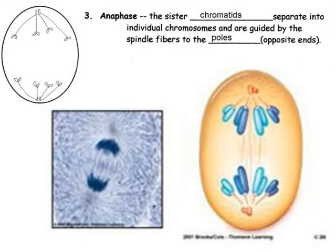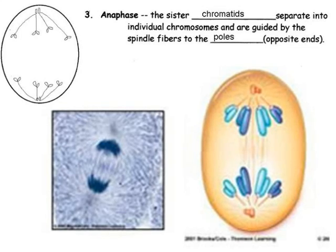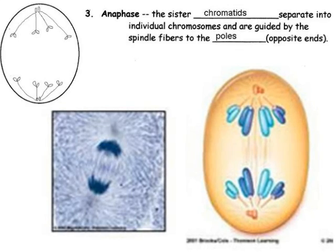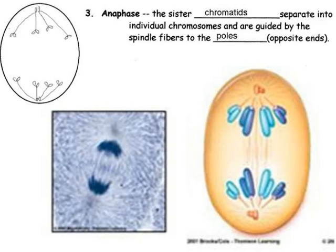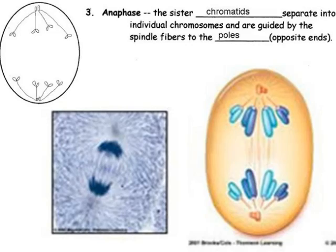During anaphase, the sister chromatids separate into individual chromosomes and are guided by the spindle fibers to the poles of the cell. The poles refer to the opposite ends of the cell. Remember, when the cell begins to enter the cell cycle, the DNA is copied so that each new cell has an exact copy of the DNA.